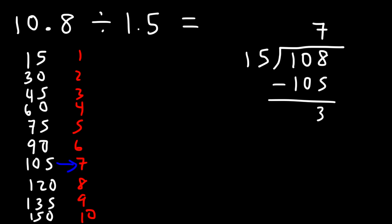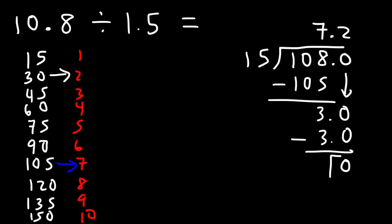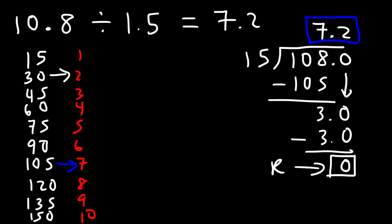Since 15 doesn't go into 3, we add a decimal point and bring down a zero, treating this as 30. How many times does 15 go into 30? Exactly two times. So 15 times 0.2 is 3, and the remainder is zero. Therefore 10.8 divided by 1.5 is 7.2.